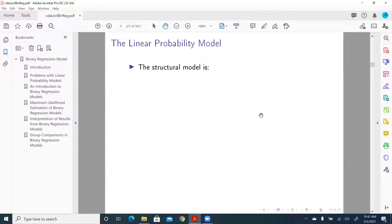The structural model of this linear probability model is y_i = x*beta + epsilon.